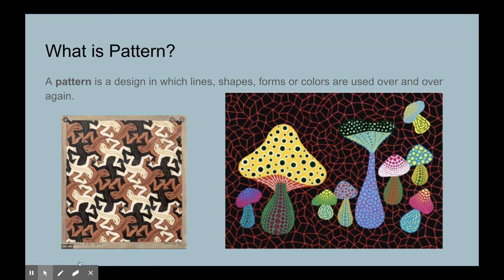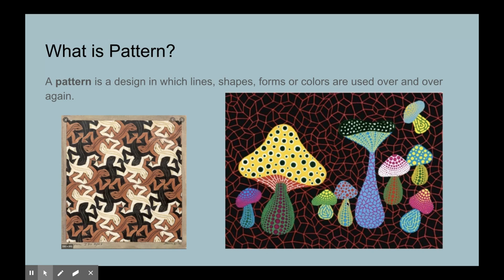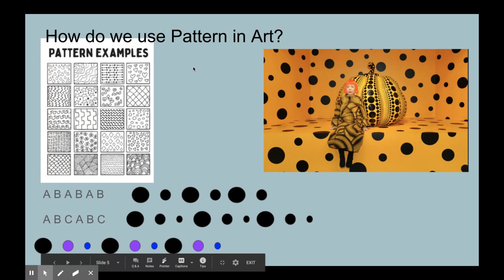Okay, so we're going to talk a little bit about pattern. Yayoi uses dots, but there are many different ways to create pattern. Pattern is a design in which lines, shapes, forms, and colors can be used over and over again. You can use them together or separately. This is one of Yayoi Kusama's paintings. She uses not only dots, but lines and different sizes of dots and lines. This artwork uses the same shape fitted together throughout, just changing the color. It's a pattern created by changing the color.